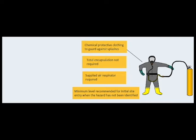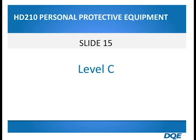Level C consists of the same type of chemical protective clothing as Level B, but instead requires the use of an air-purifying respirator, such as a powered air-purifying respirator.